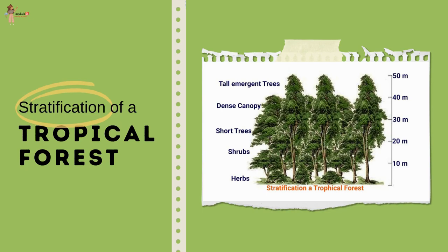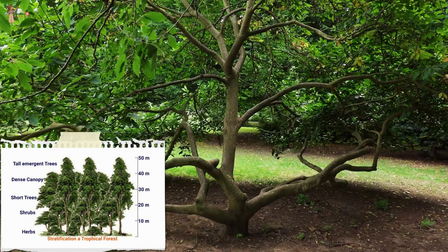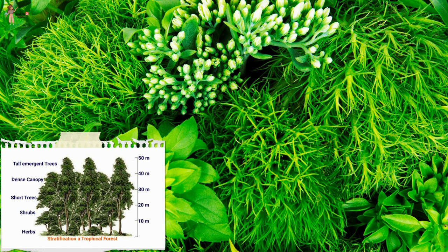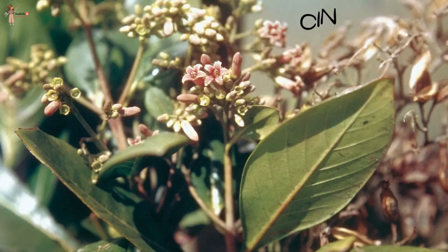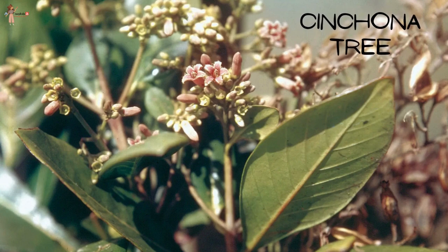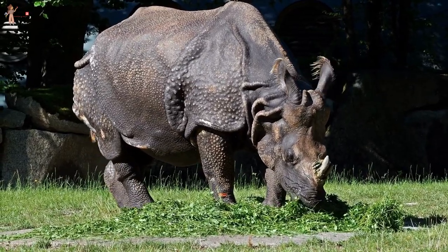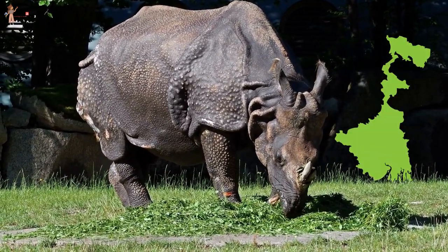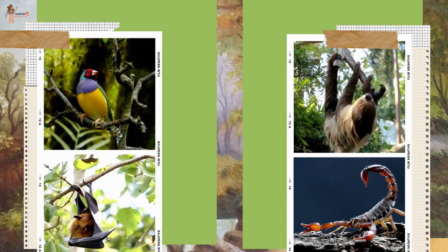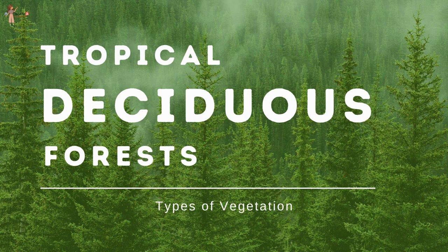The stratification of a tropical forest includes tall emergent trees more than 40 meters tall, a dense canopy above 30 meters, and hot trees, shrubs and herbs. Commercially important trees include ebony, mahogany, rosewood, rubber and cinchona. Common animals include elephant, monkey, lemur and deer. One-horned rhinoceros are found in Assam and West Bengal, along with birds, bats, sloths, scorpions and snails.